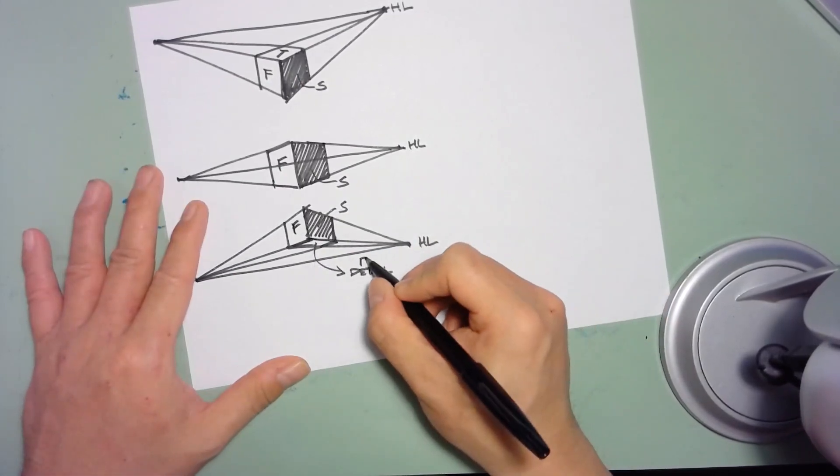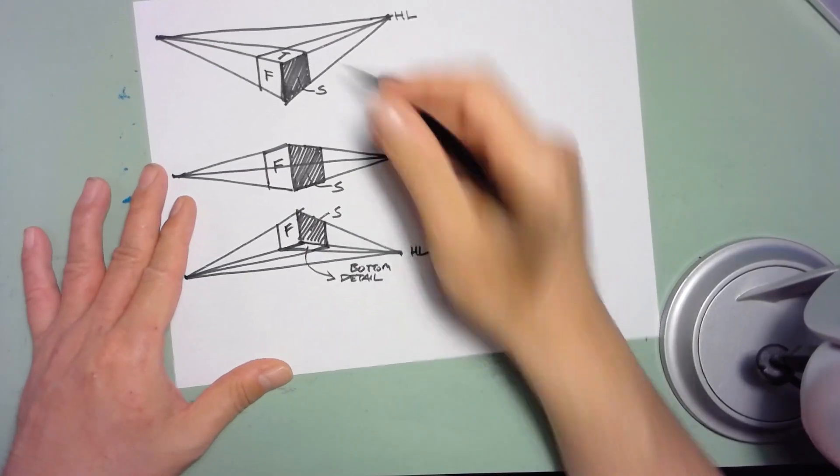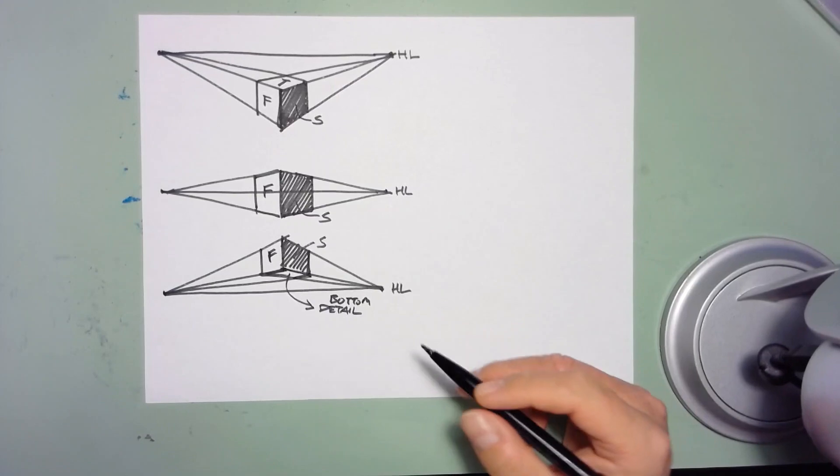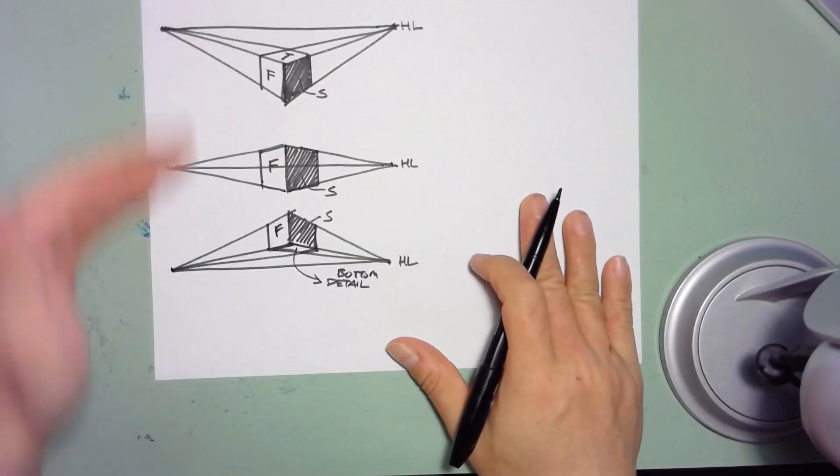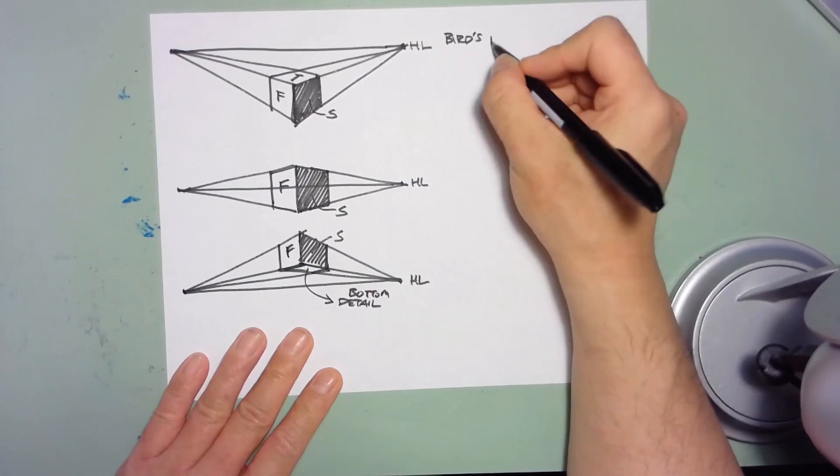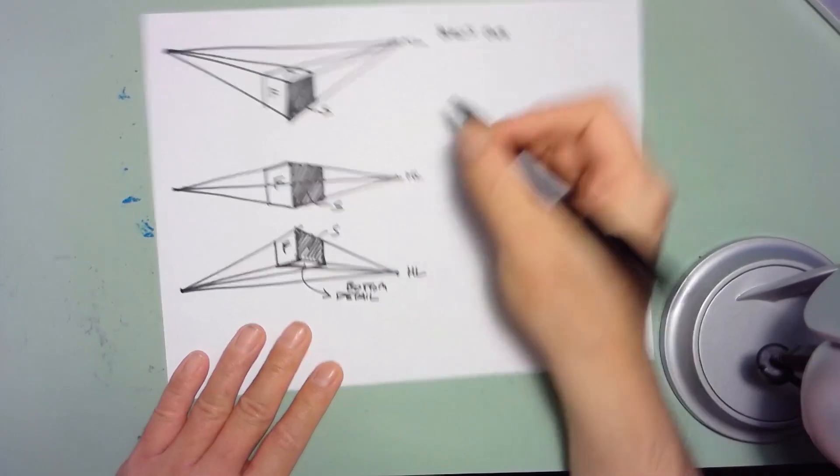This is sort of a cousin to the bird's-eye view in that you see a third plane. All right, so those are the three main types of viewing angles.